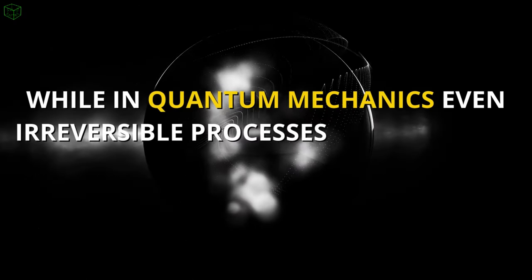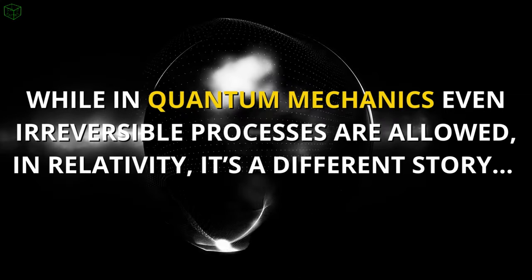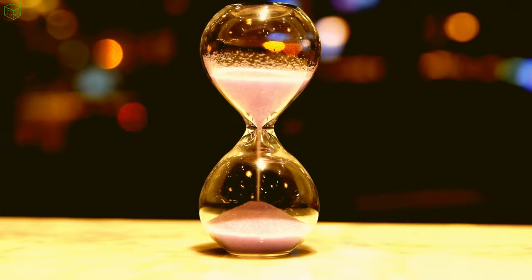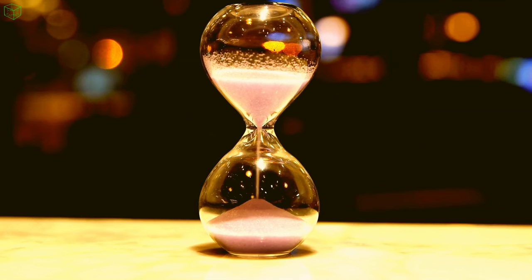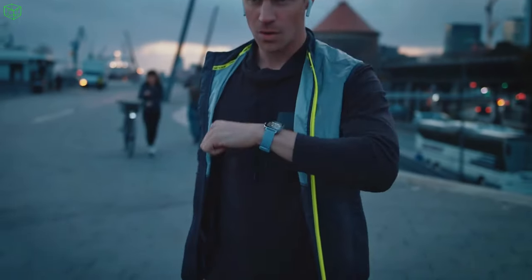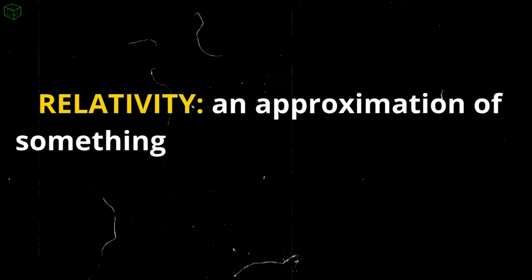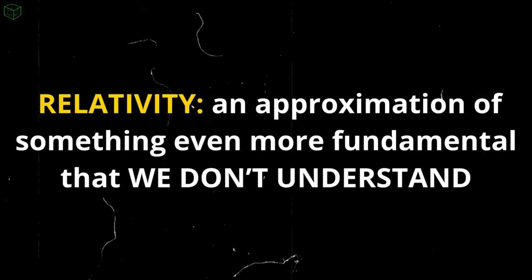While in quantum mechanics even irreversible processes are allowed, in relativity, it's a different story. In relativity, time interferes with practically everything, and it is necessary to consider how time is passing for each observer, otherwise the results won't align. This suggests that general relativity might just be an approximation of something even more fundamental that we don't understand.